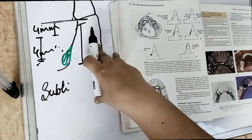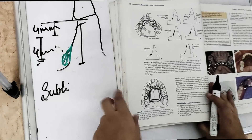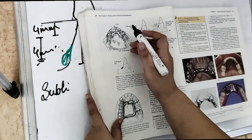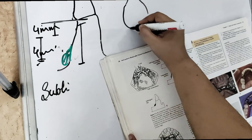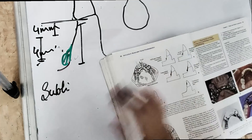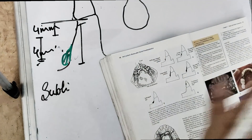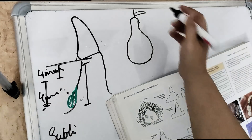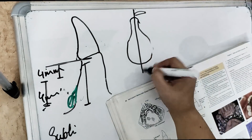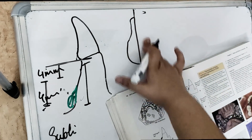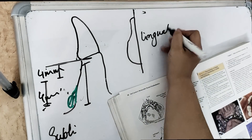To visualize the shape, imagine cutting a pear in half — that gives you the cross-sectional shape of a lingual bar. This half pear shape is the classic form of the lingual bar.